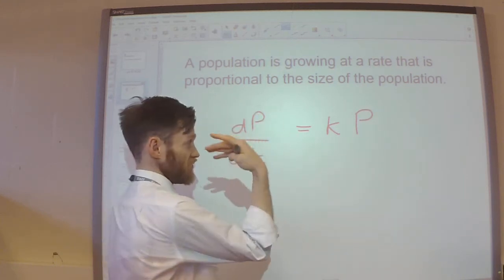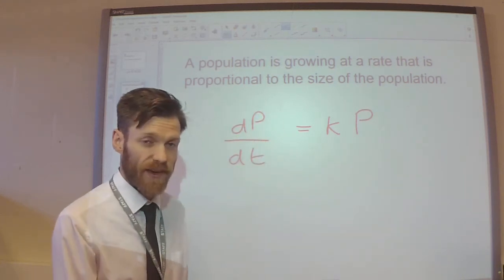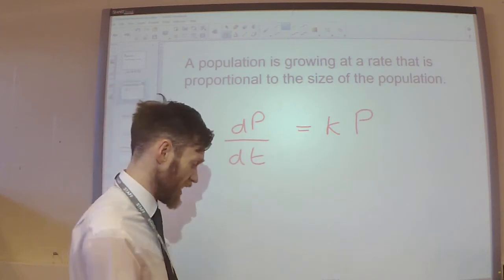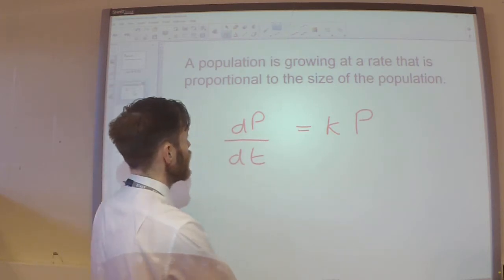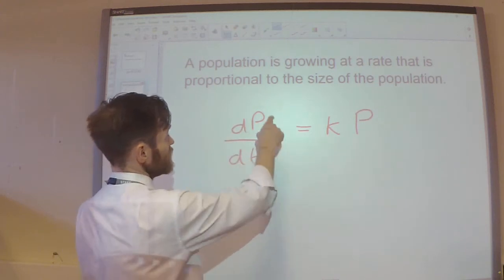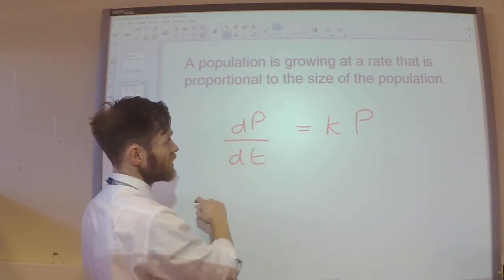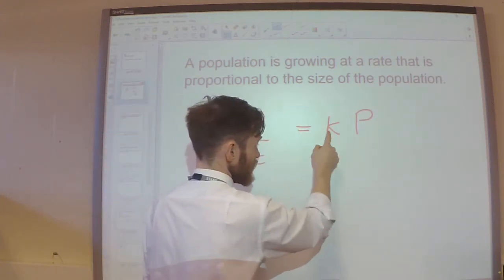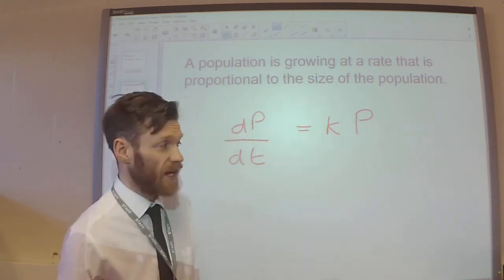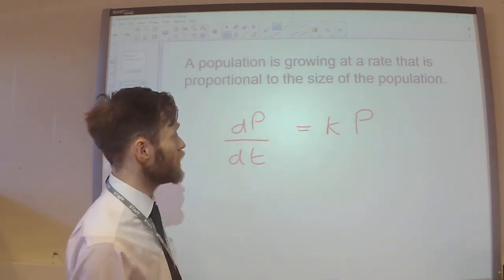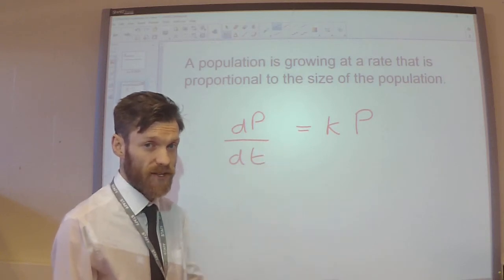Or, you might have just been told to just write that down straight away and forget about the proportion sign. Depends on how you were taught in the lower school. But, there we go. We've got the rate of change of the population is proportional, so equals k, times the population. So, we've turned that sentence into a differential equation.